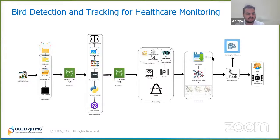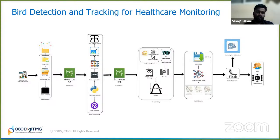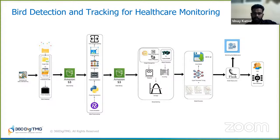This is the proposed architecture for the business problem. Once we understood the business objective and the data, we collected video and image data from the client and transformed the videos to frames. We stored this data in our AWS S3 bucket. After that, we performed annotation using RoboFlow. Once annotation was done, we moved on to augmentation. After augmentation, we split the data into three parts: train, test, and validation, and saved it again into our S3 bucket.